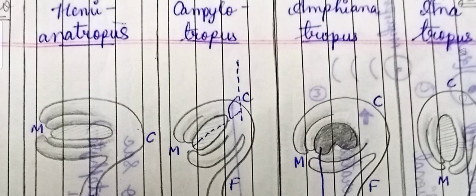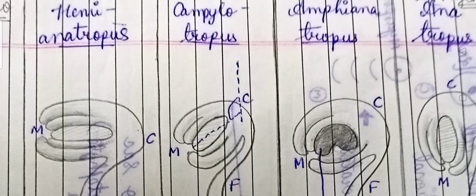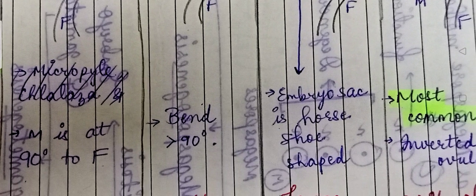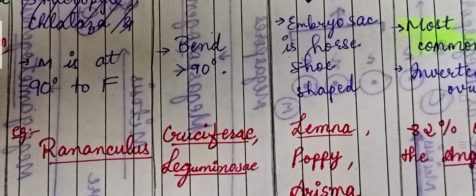The next type is campylotropous. In campylotropous, the structure is slightly more bent than hemi-anatropous — the angle between M and F is more than 90 degrees. Examples of campylotropous are Cruciferae and Leguminosae.